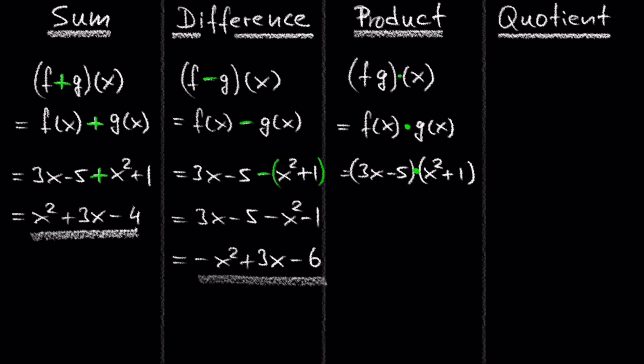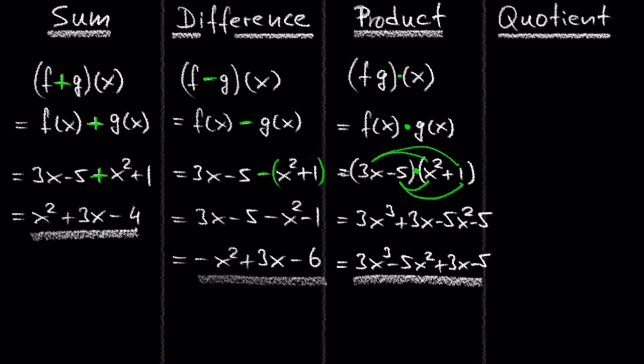We can solve this with the FOIL method. 3x times x squared is 3x cubed. 3x times 1 is 3x. Negative 5 times x squared is negative 5x squared. And negative 5 times 1 is negative 5. So we get 3x cubed plus 3x minus 5x squared minus 5. We combine like terms and write in standard form to get 3x cubed minus 5x squared plus 3x minus 5, which is the product of f and g.